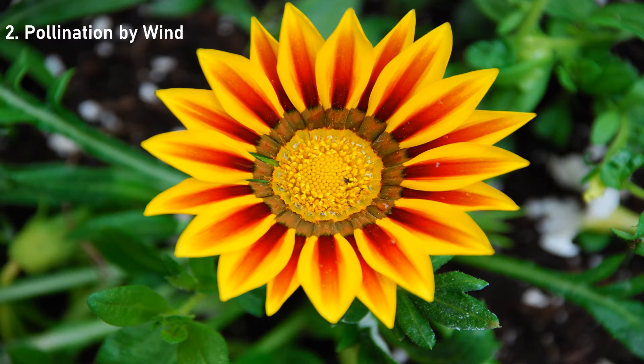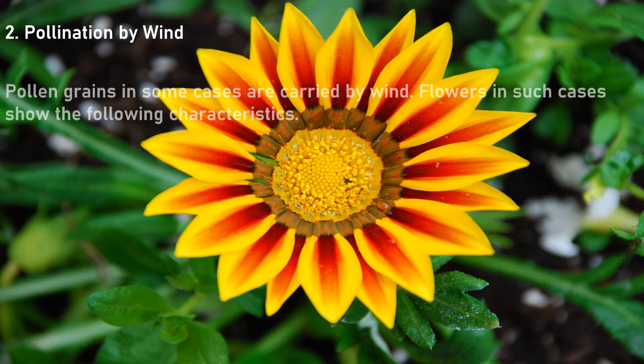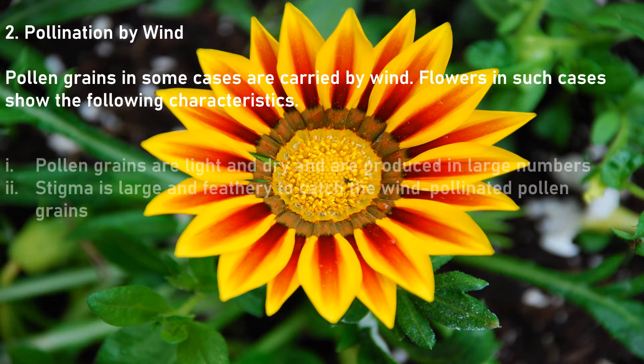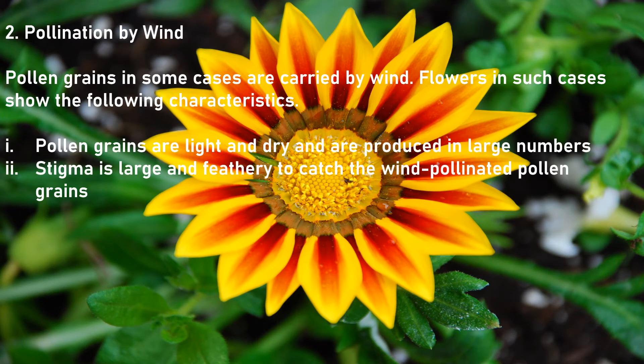Pollination by wind. Pollen grains in some cases are carried by wind. Flowers in such cases show the following characteristics: pollen grains are light and dry and are produced in large numbers. The stigma is large and feathery to catch the wind-pollinated pollen grains.